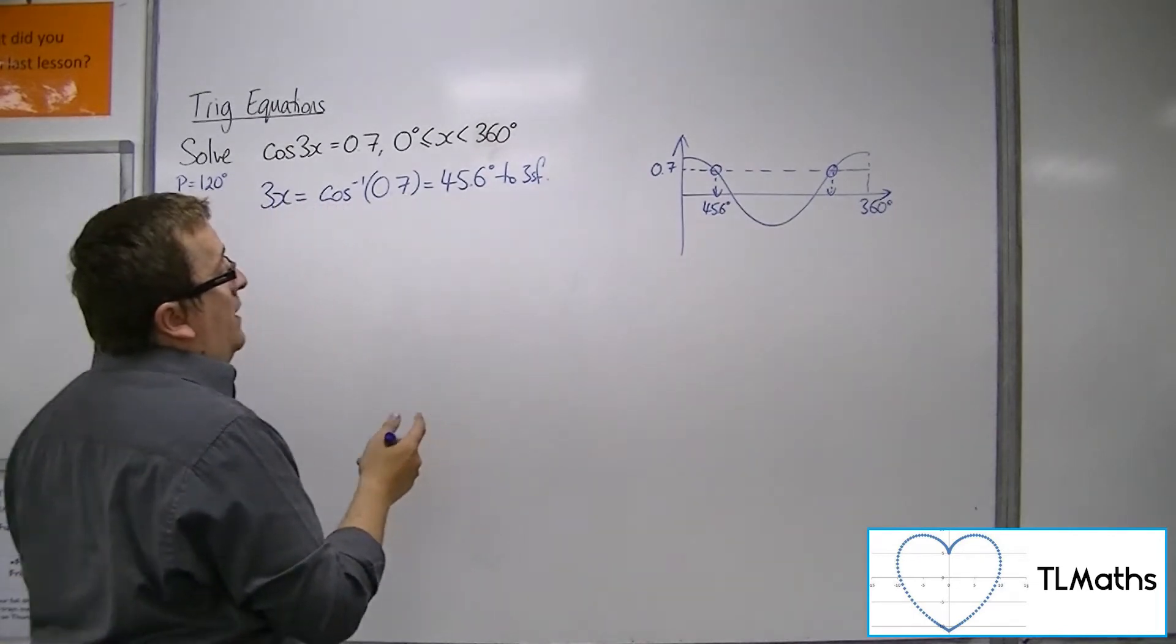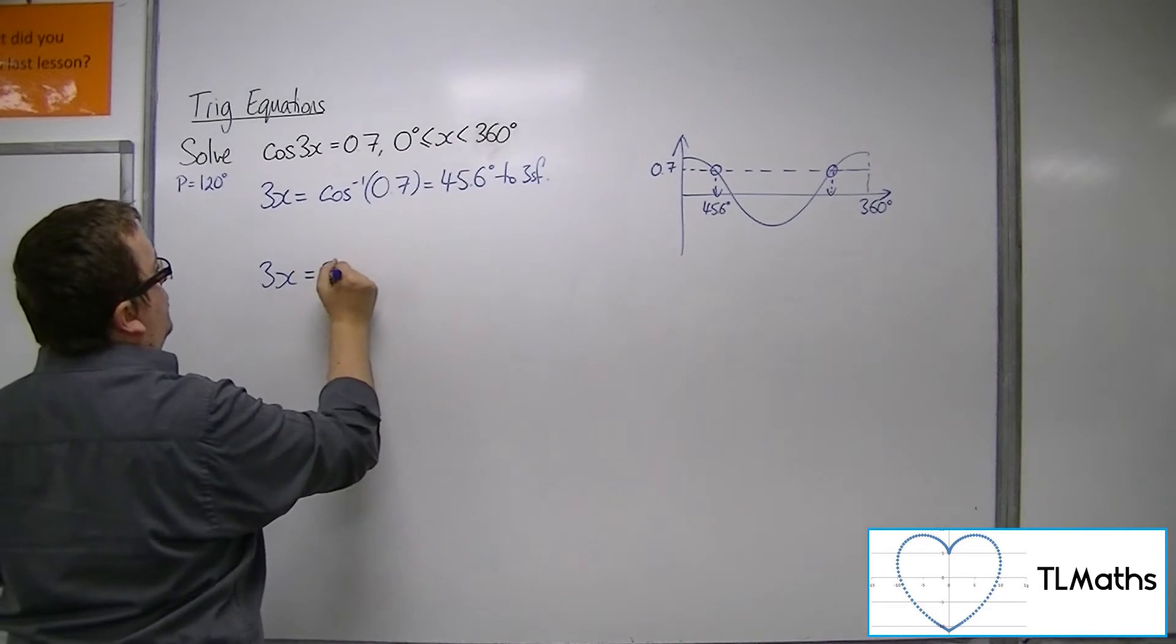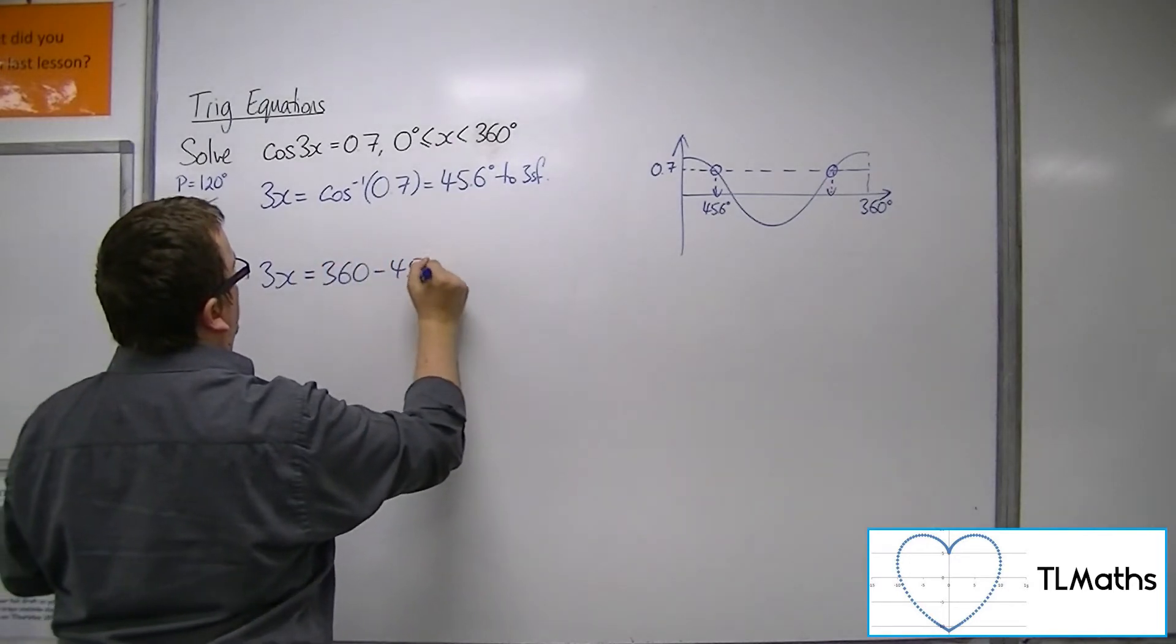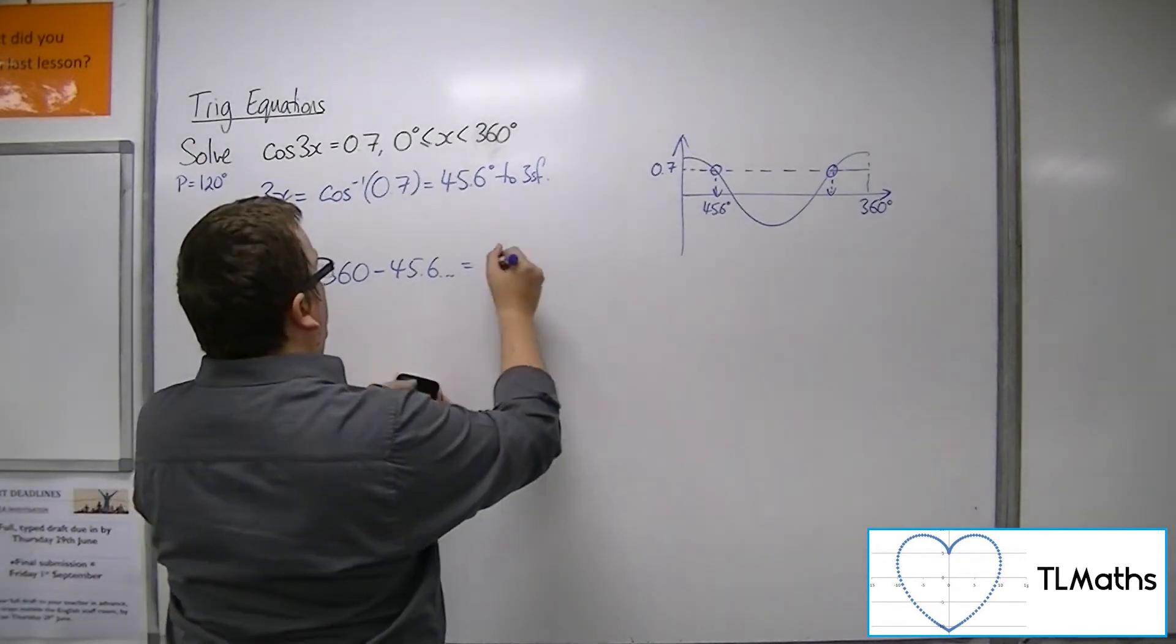And the second can be found by subtracting 45.6 from 360, which is 314.